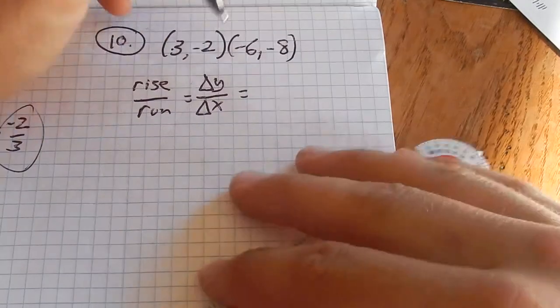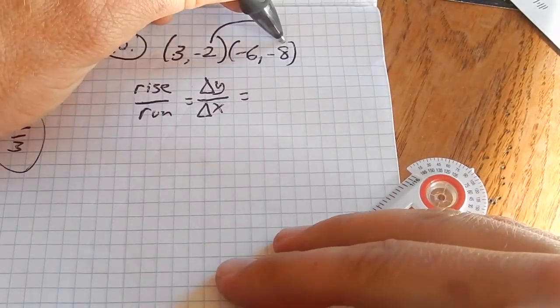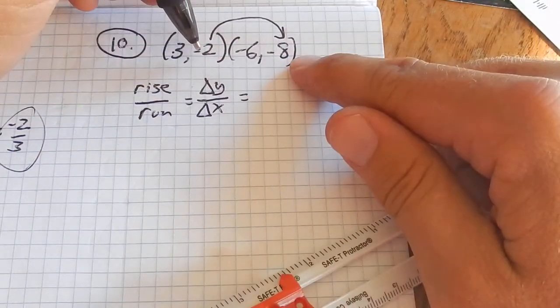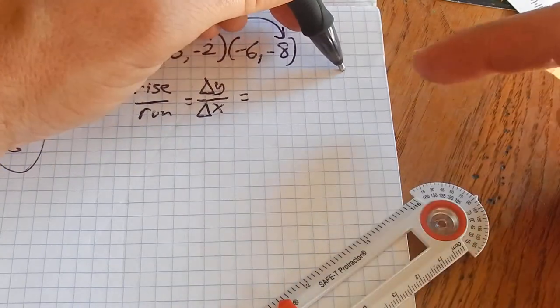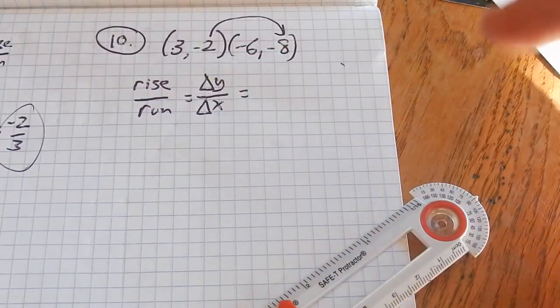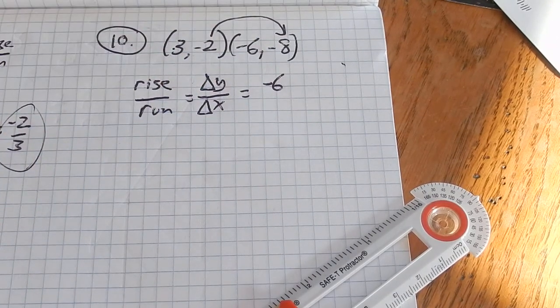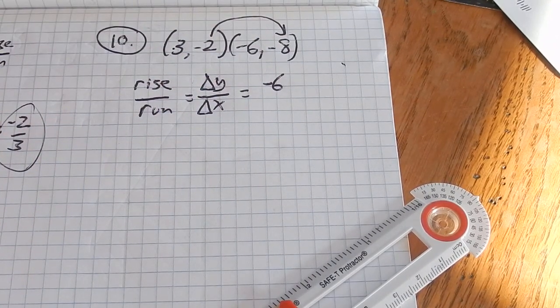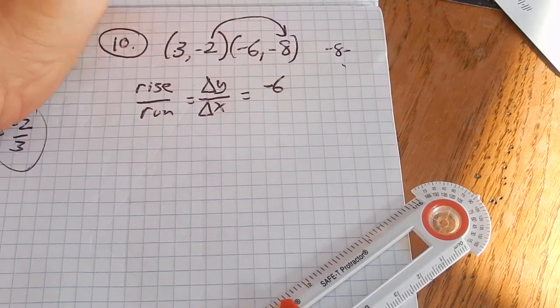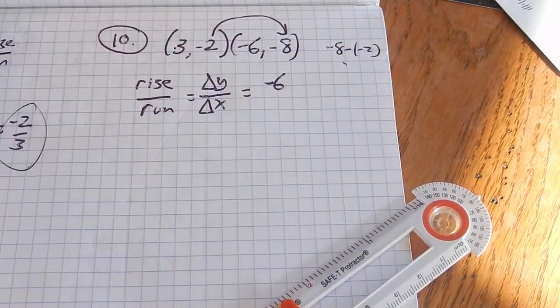So, my change in y. If I start at negative 2 and go down to negative 8, I've gone down 6. If you don't see that, you could do negative 8 minus negative 2, if you prefer that.